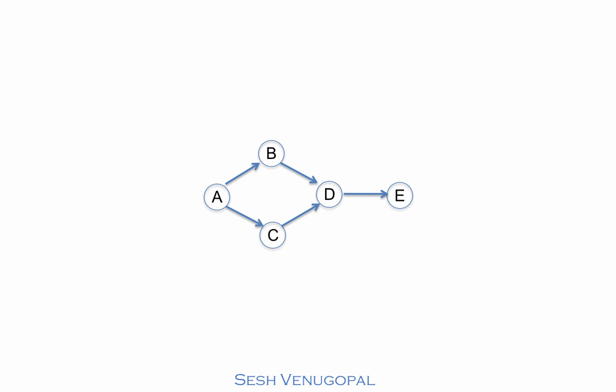The traversal must start at some vertex. It doesn't actually matter which. Suppose we start at vertex A. Next, we can choose to either take edge AB to go to vertex B or edge AC to go to vertex C.